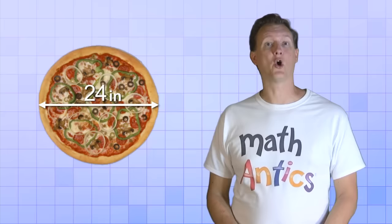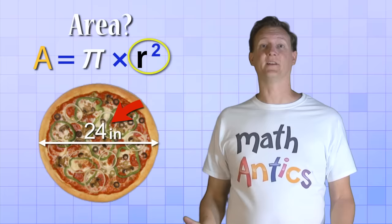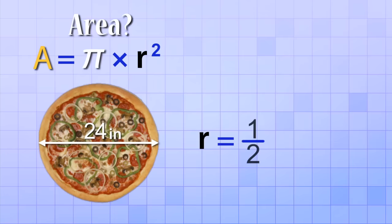Here's another real-world example with a circle. If this pizza has a diameter of 24 inches, what's its total area? Well, using our formula, we start by squaring the radius. But the problem didn't give us a radius, it gave us the diameter. So we have to calculate the radius from the diameter. Fortunately, that's really easy. The radius is just half of the diameter. So we just need to divide the diameter by 2. 24 inches divided by 2 gives us 12 inches for the radius.